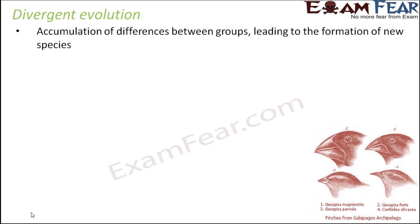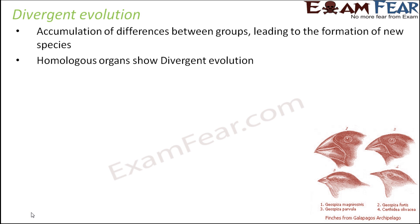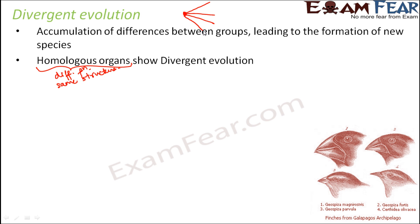Let us look at divergent evolution — it is going to be just the opposite. Here, accumulation of differences between groups leads to the formation of new species. You are talking about related groups of organisms, but differences cause them to give rise to new species. In divergent evolution, we talk about homologous organs — organs which have the same structure and same origin, but different functions. Related organisms have similar structure, but over time those structures perform different functions.